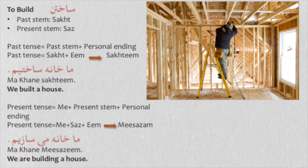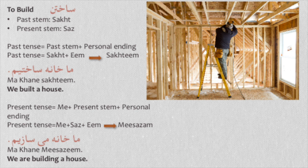The seventh verb is sohtan — to build. The past stem is 'soht' and the present stem is 'soz'. For the past tense, conjugated for we, we need the past stem 'soht' plus 'im': 'sahtim'. Ma khani sahtim — we built a house. For the present tense, we need 'me' plus present stem plus 'im': mi sahtim. Ma khani mi sahtim — we are building a house.